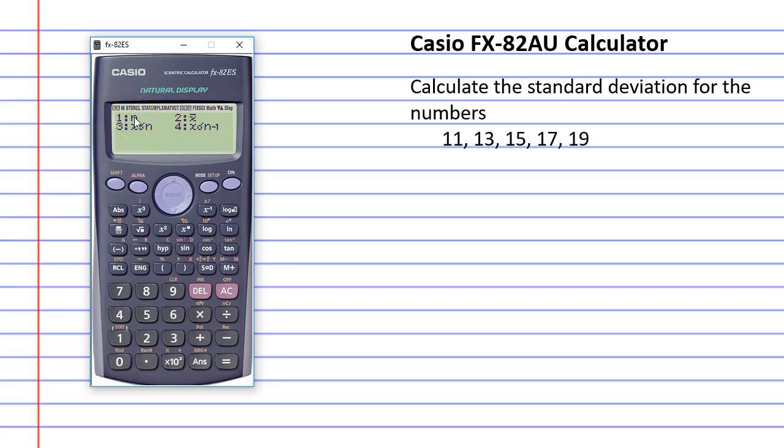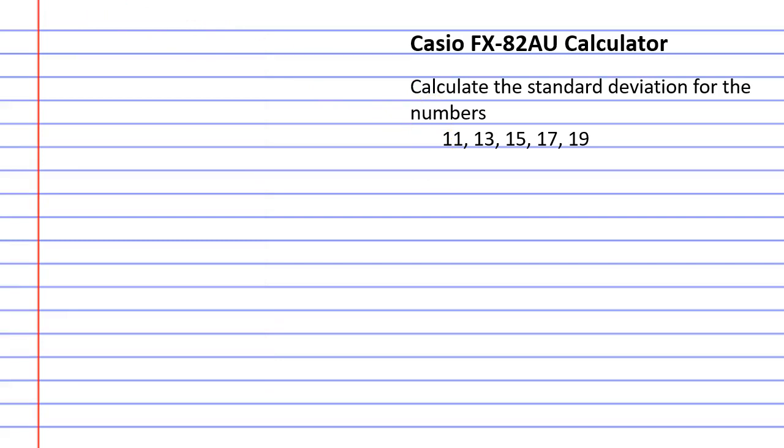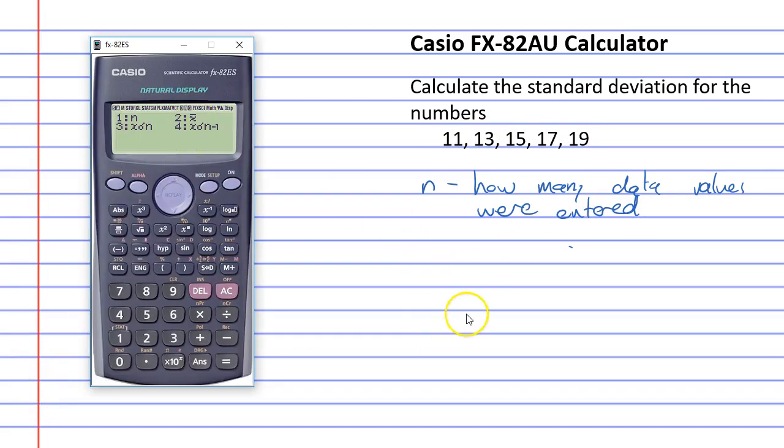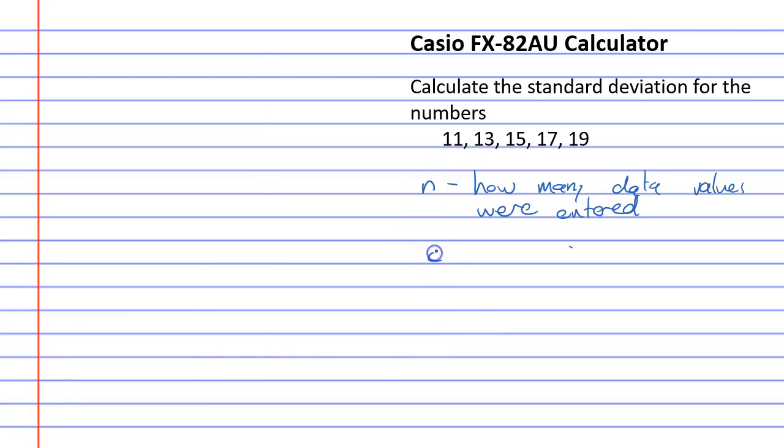Option 1 is n. Now, n will actually tell you how many numbers you have. So, let's write all these down. Option 1, we've got n, which will tell you how many data values were entered. So, for this case, it would be five. We've entered five data values. What else do we have there? We have x with a bar above it. So, x bar will find you your mean. So, sometimes you might want to use your calculator to find mean.